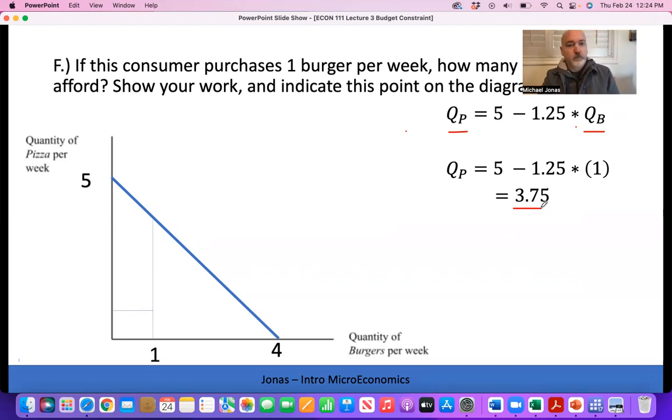That's the height of the budget constraint line when X equals 1. So let's go straight up and we get 3.75. The other way to get there would be to say, if we started at this point purchasing zero burgers and spending all our money on pizza, and we moved one to the right, we consume one extra unit, one burger. How far down are we going to have to go? It'll be that opportunity cost, that 1.25 units, which would land us right where we knew we were going to end up at 3.75.